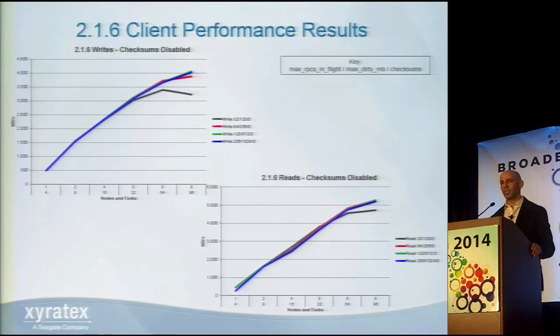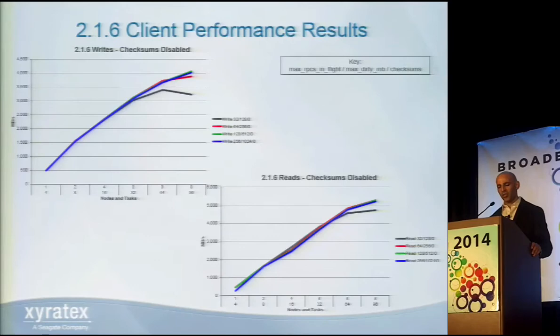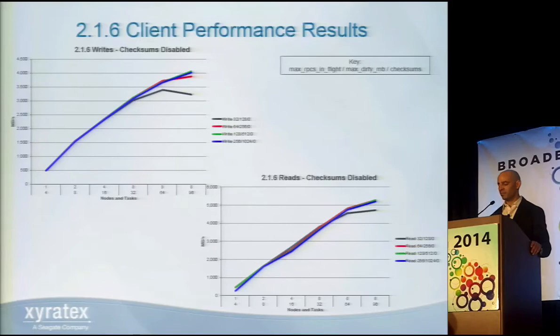With 2.1.6, regardless of what I tried, the highest read performance I could get was just over 5 gigabytes per second, and the highest write performance was right around 4 gigabytes per second. You could see performance increasing with more threads, but the different client settings didn't have an impact on maximizing storage throughput. With eight clients, we saw at most 4 gigabytes per second on writes — nowhere near what the storage architecture was able to push.